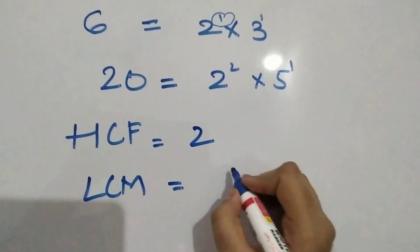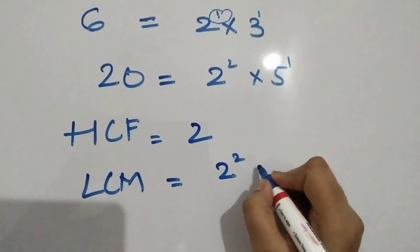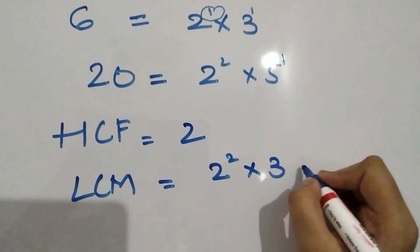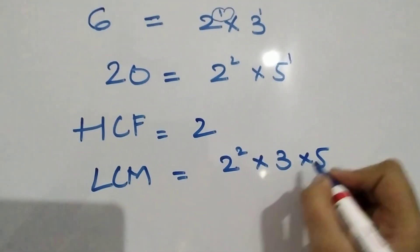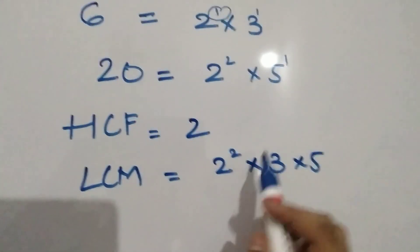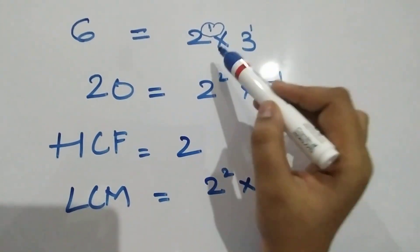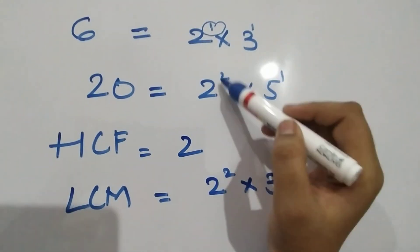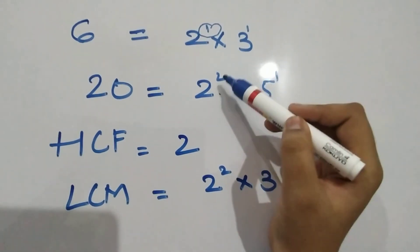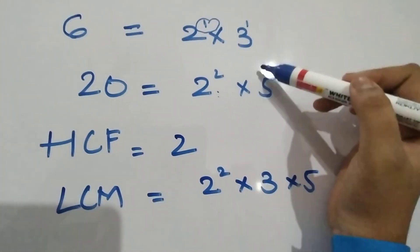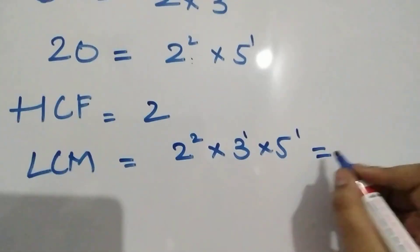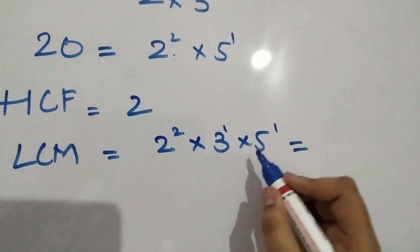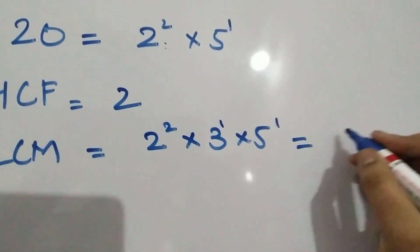LCM is the greatest power. So the greatest power in 2 and 2 square is 2 square. So we need to take 2 square, 3 and 5. 2 square into 3 into 5 is 60.